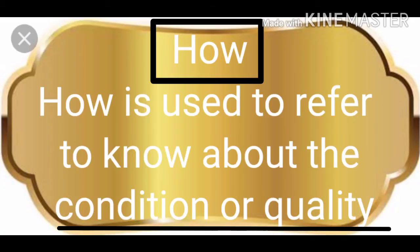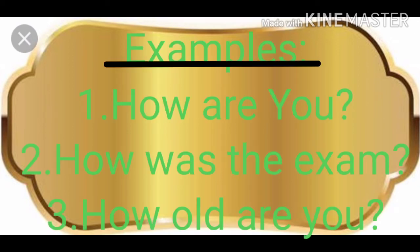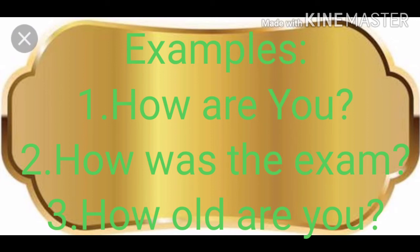The next one is HOW. HOW is used to refer to know about the condition or the quality — you want to know how something is. Example: How are you? — whether you are fine or not okay, that is the condition. How was the exam? — you want to know about the exam. How old are you? So these are some of the question words we use to frame the questions.